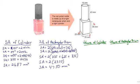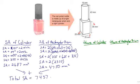Now we've calculated the surface area of each of the three-dimensional objects that make up the composite object. The last remaining step is to add the cylinder's surface area and the rectangular prism's surface area together. The total surface area for this nail polish bottle is 7,437 mm².